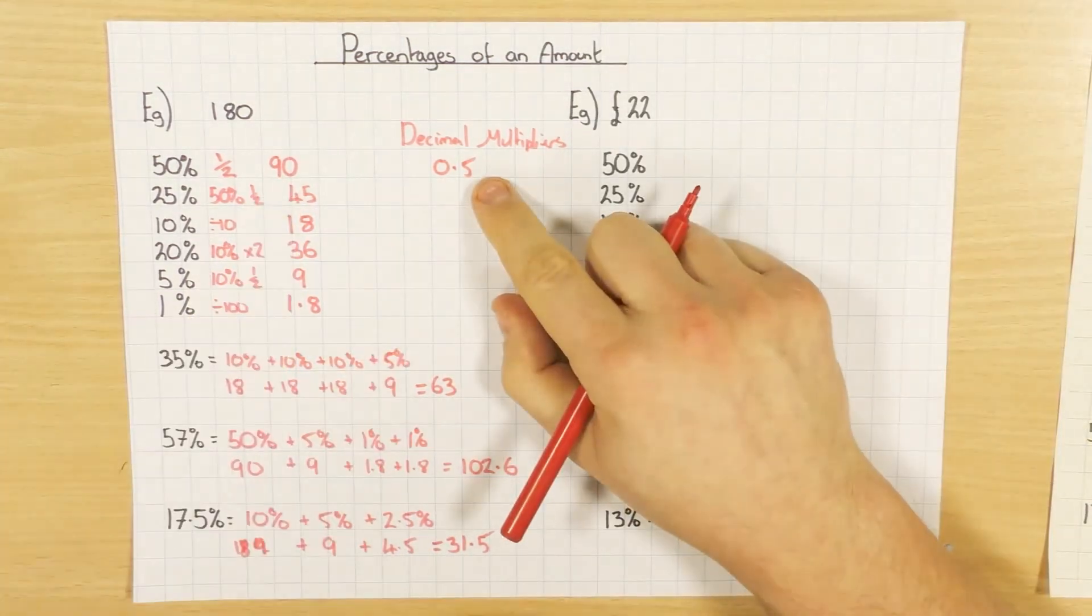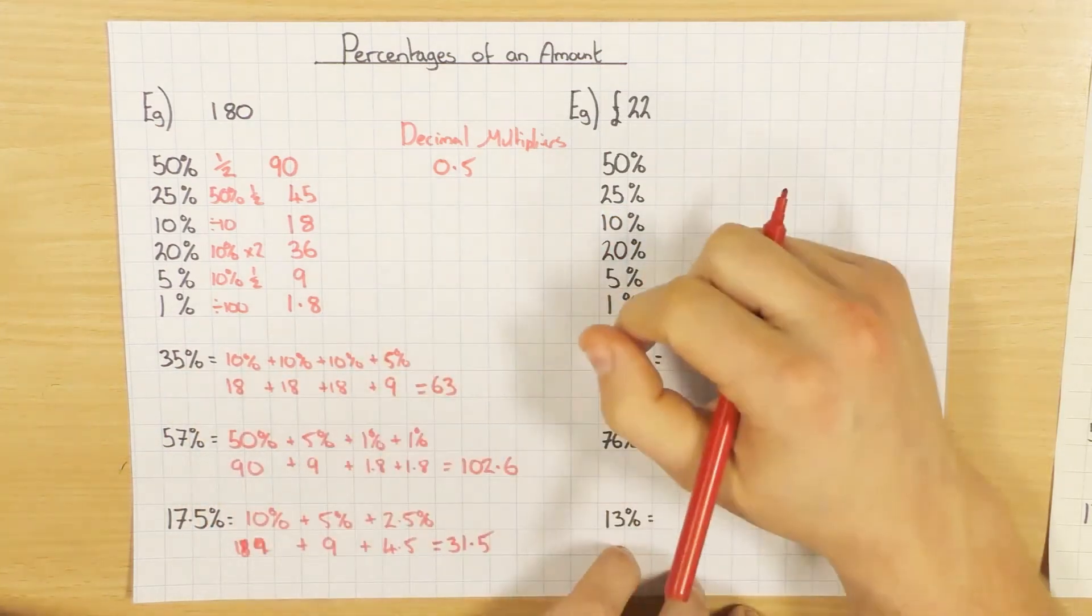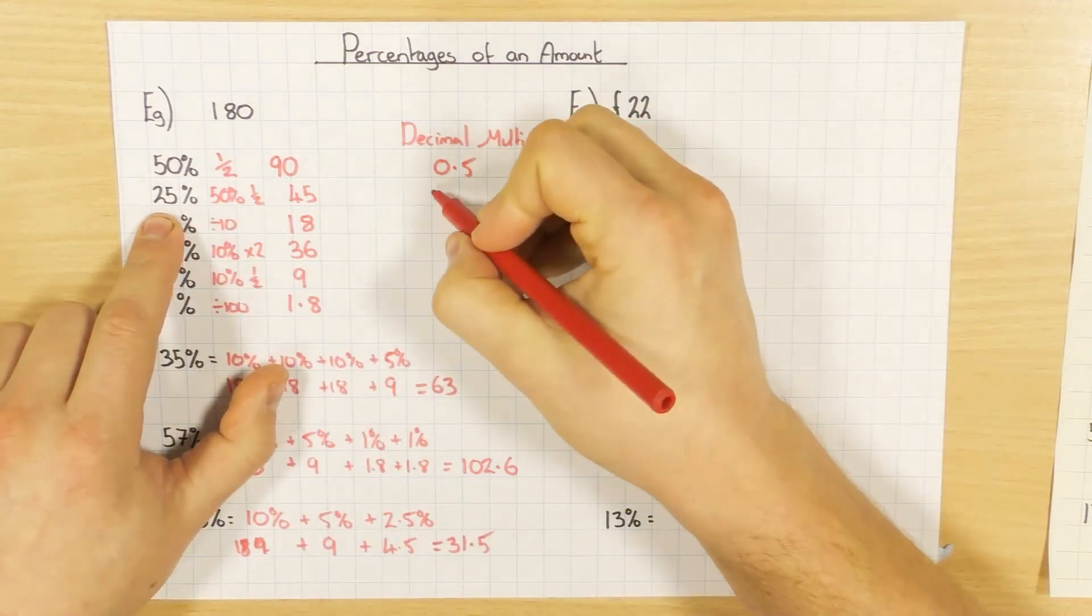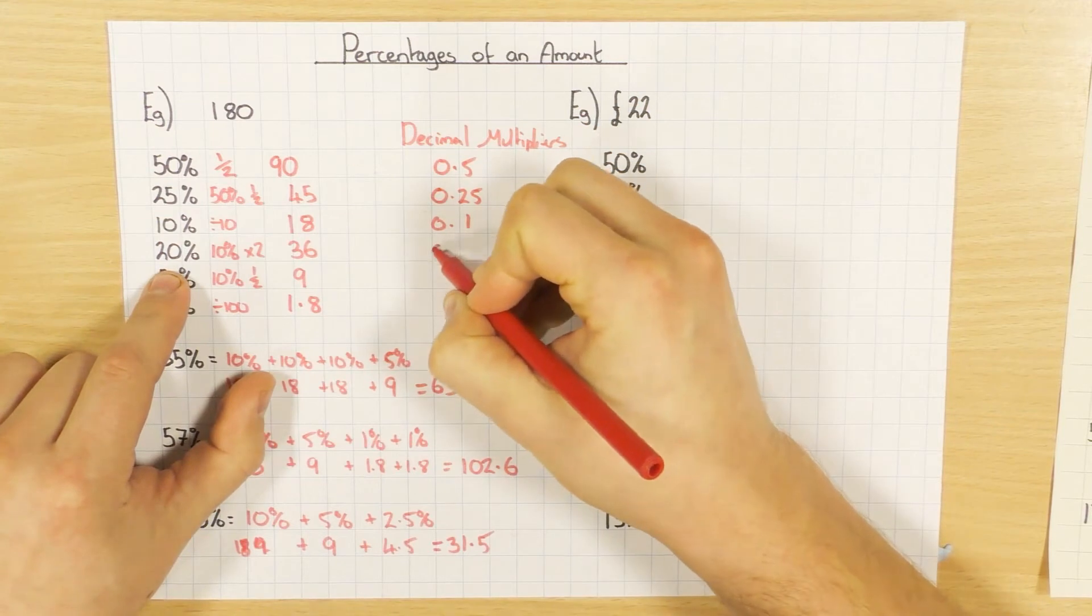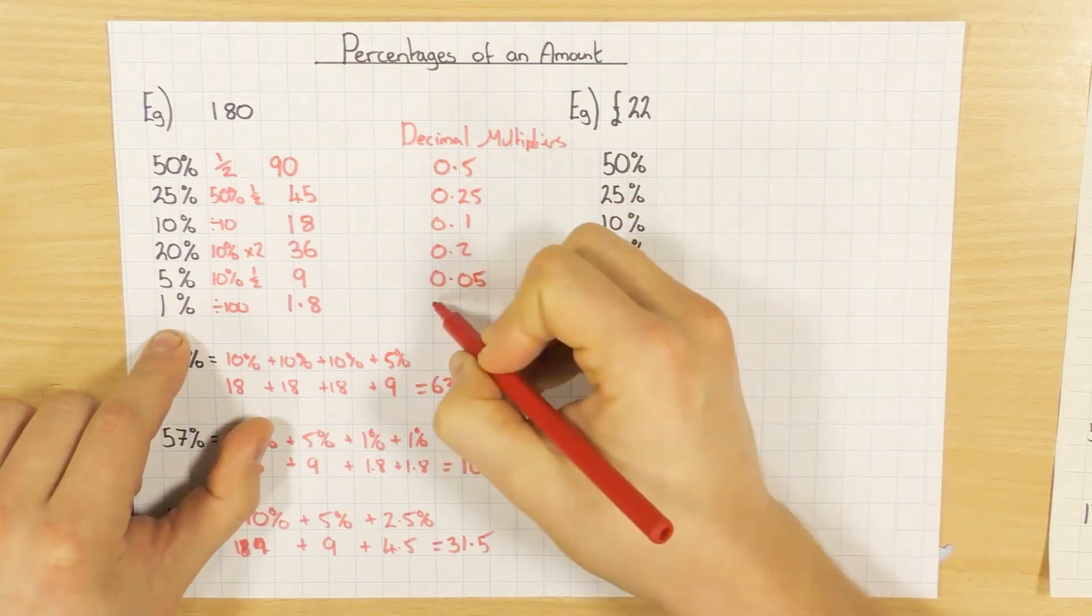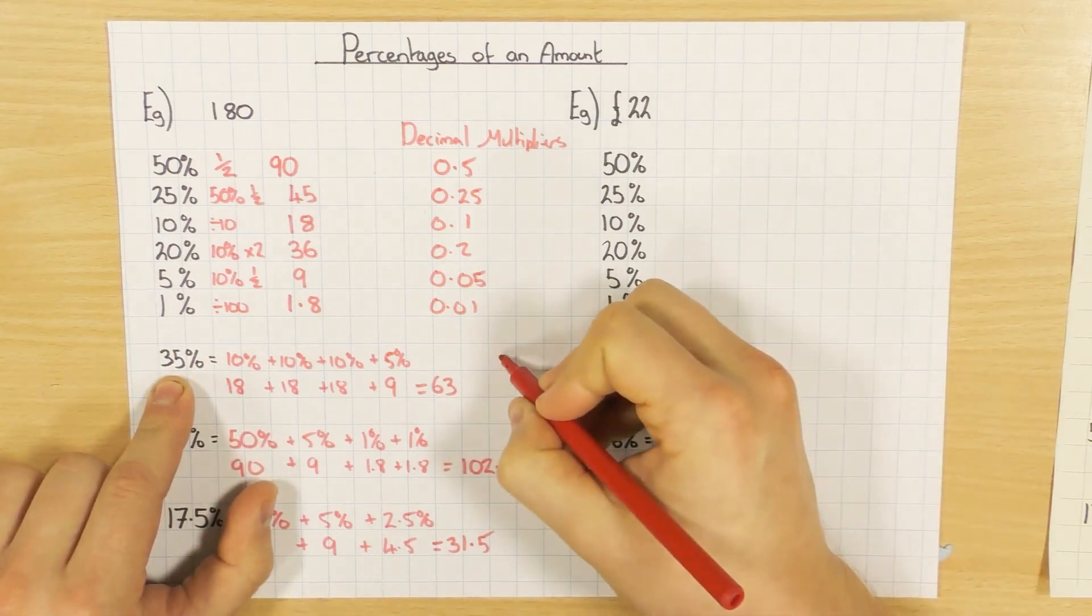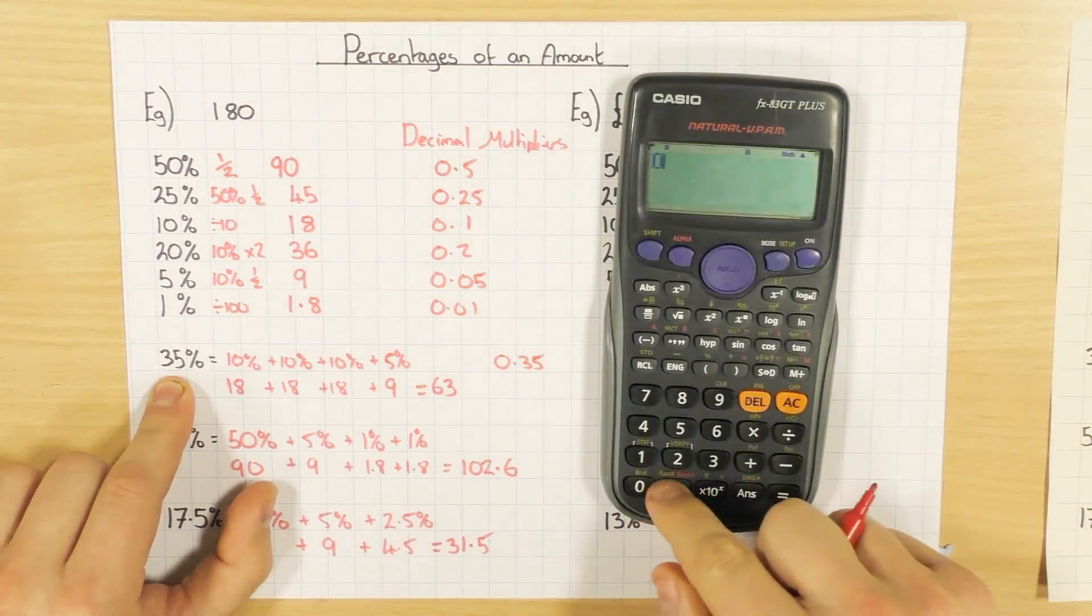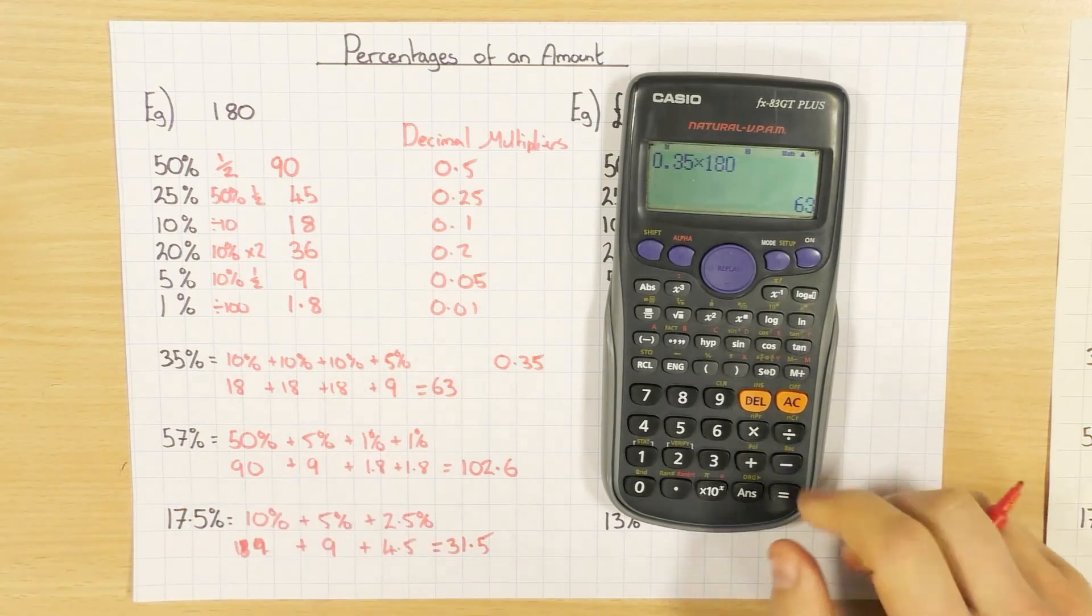The reason why I'm talking about this is because sometimes in the exam, it will say which decimal multiplier will find 50% or 35% or 57%. So I'm just giving you a heads up now. This is what it's all about. To find the decimal multiplier of 25%, just convert it to a decimal. So 0.25, 0.1, 0.2. Careful with this one—0.05, because remember we're dividing by 100. And 1%, again, 0.01. So just to check it for this one, 35%, convert it to a decimal, 0.35. And I'll just prove it again. So 0.35, if you times that by your 180, again you get the 63.